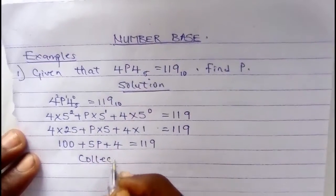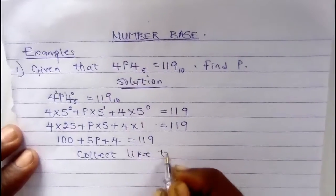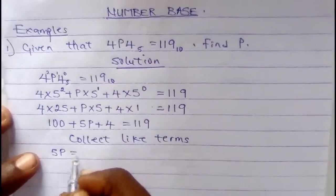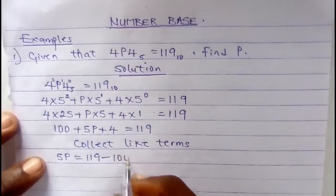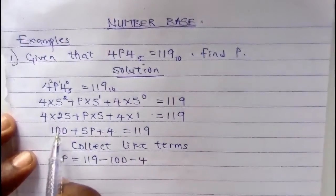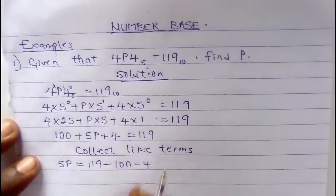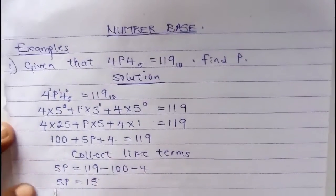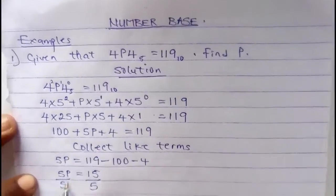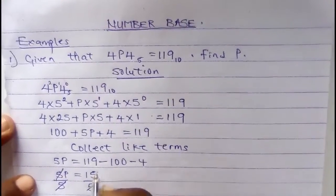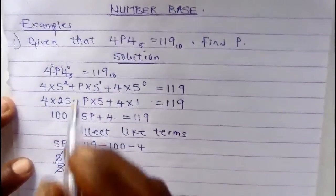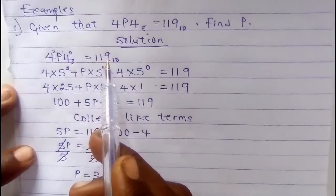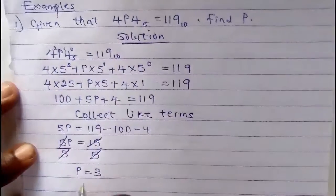Collecting like terms: 5p equals 119 minus 100 minus 4. Since those numbers cross to the other side, 5p equals 15. Dividing both sides by 5: 5 cancels 5 leaving p, and 5 cancels 15 leaving 3. So p equals 3. If you substitute 3 back in, your answer will equal 119 to the base of 10.